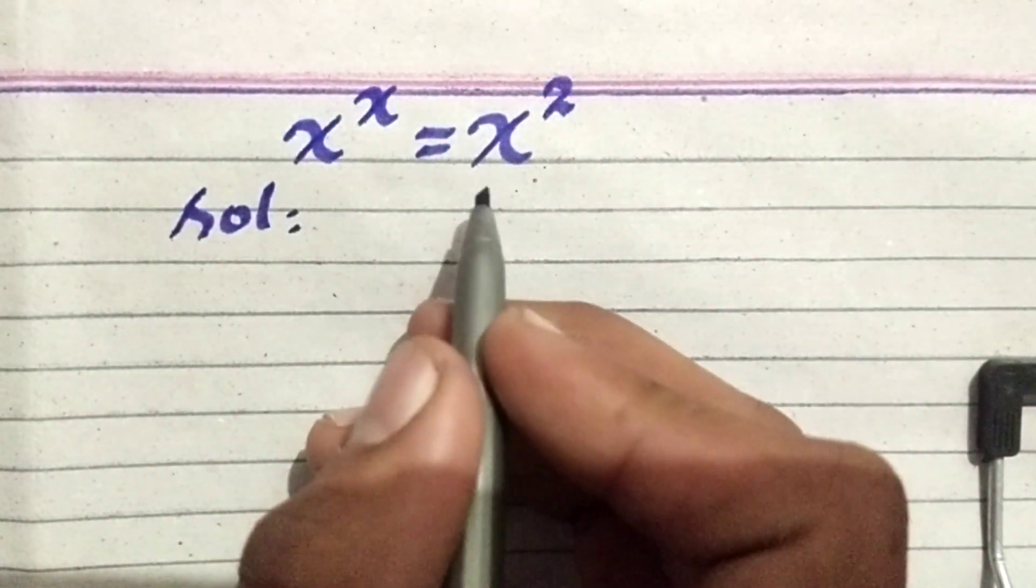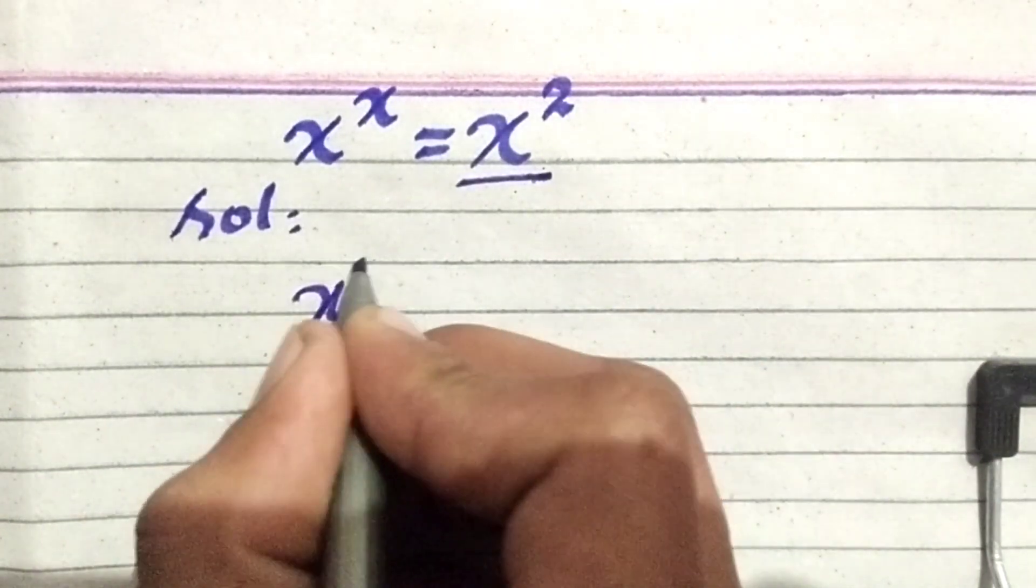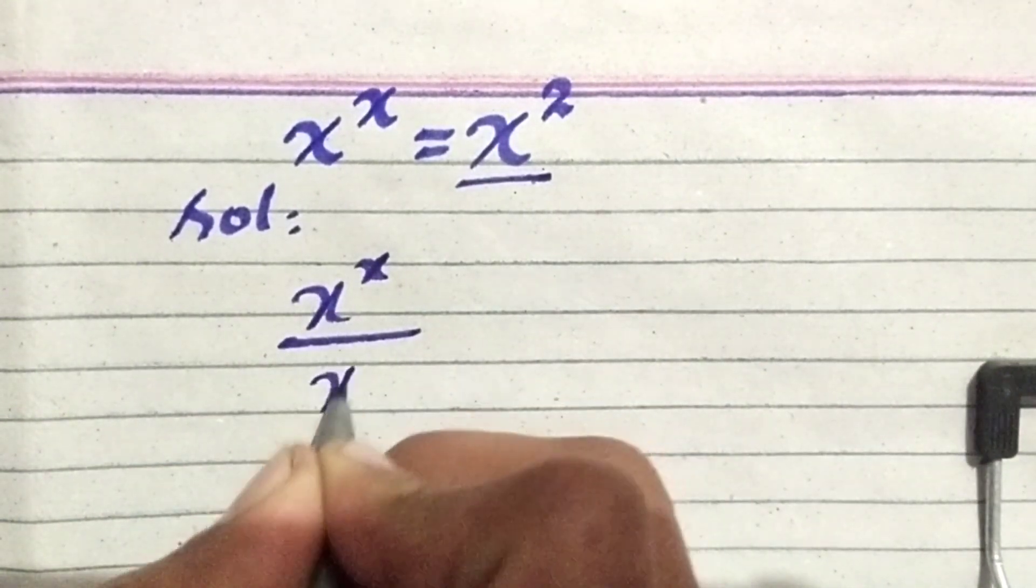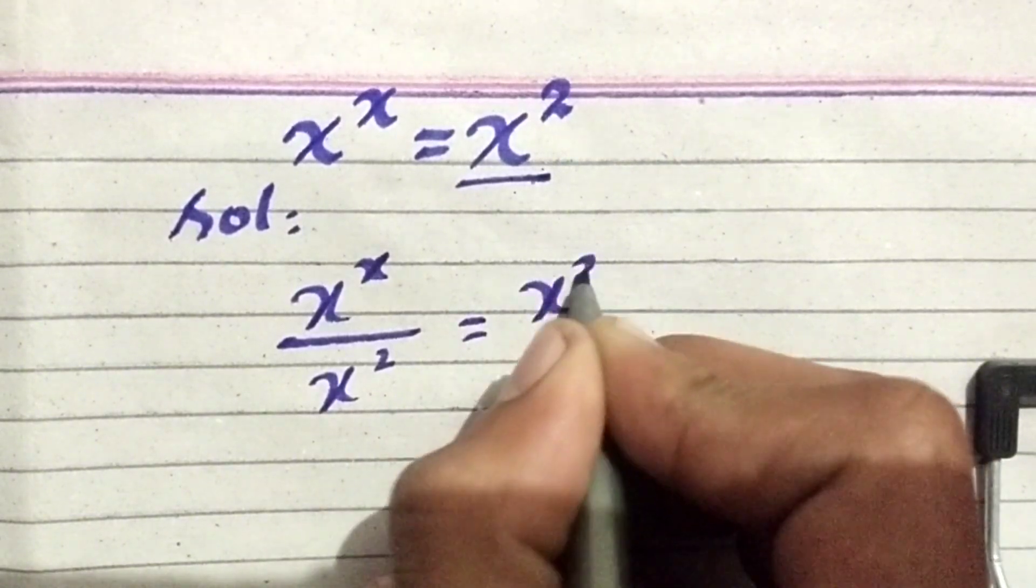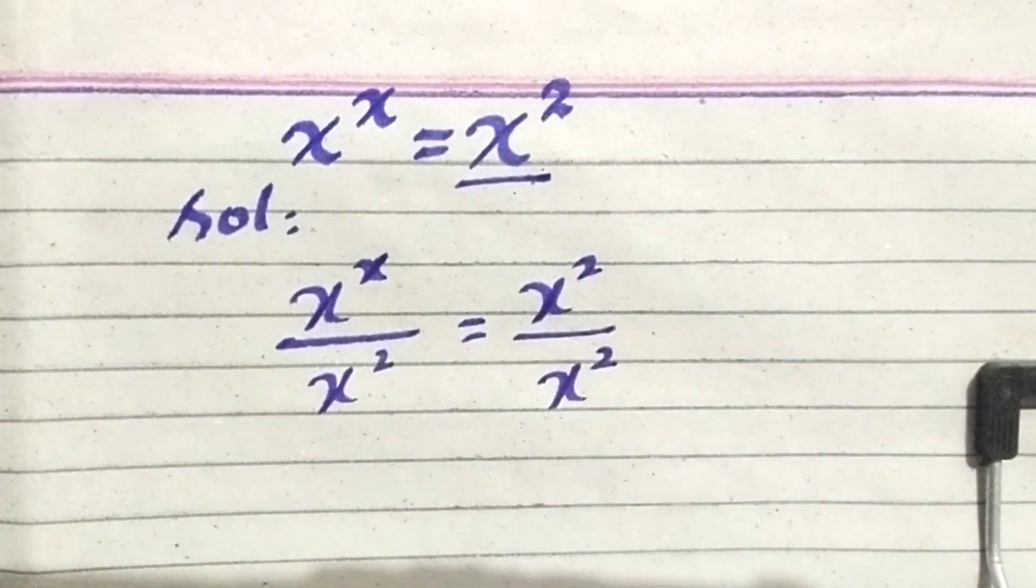Now the first step, we divide both sides by x square. So this equation becomes x power x divided by x square is equal to x square divided by x square.